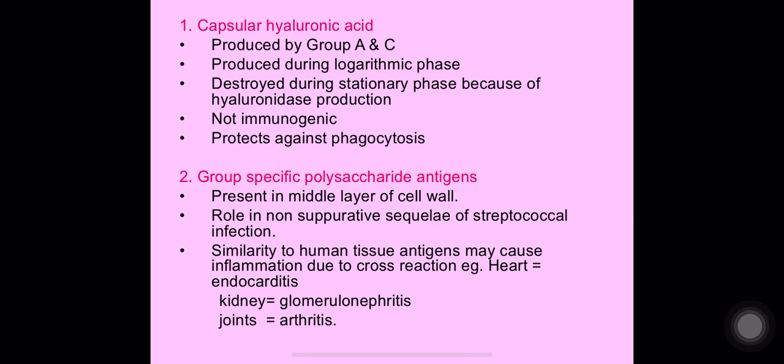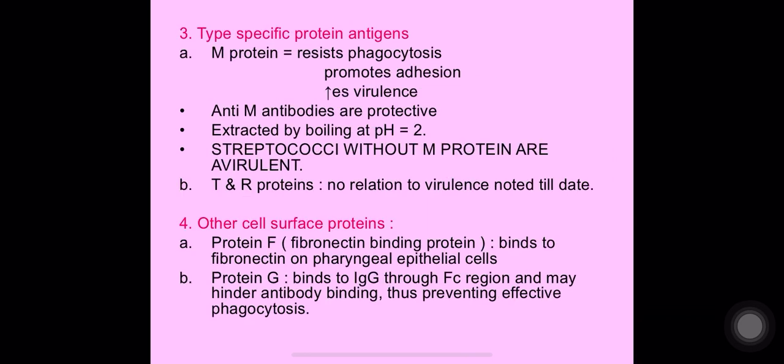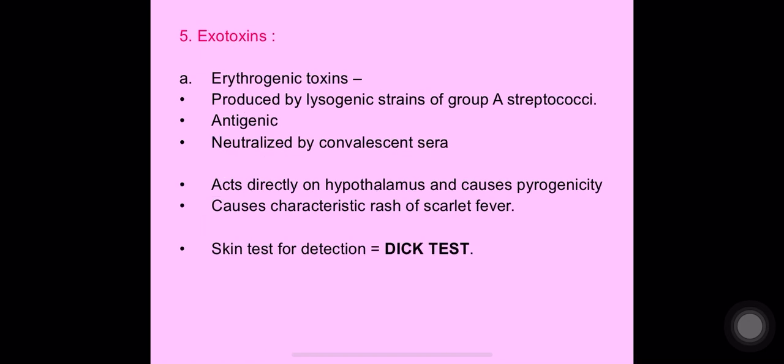The group-specific polysaccharide antigens of streptococci have similarity with human tissue antigens, leading to cross-reactivity and inflammation. For example, in the heart it can cause endocarditis, in the kidney glomerulonephritis, and in the joints arthritis. The M protein is a key virulence factor — streptococci with M protein are virulent, while those without M protein are avirulent.